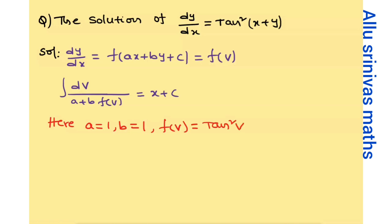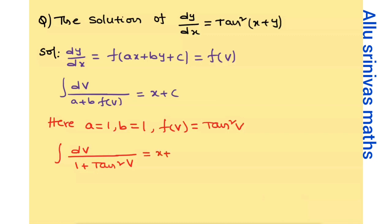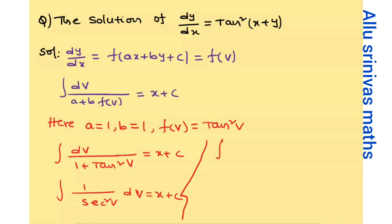If you have a problem in the form f of (ax plus by plus c), using this shortcut you can solve it easily. Applying the formula, the integral of dv by (a plus b·f(v)) equals x plus c. Simplifying, we get 1 plus tan squared v in the denominator, and using the trigonometric identity this becomes sec squared v, so dv divided by sec squared v equals dx.